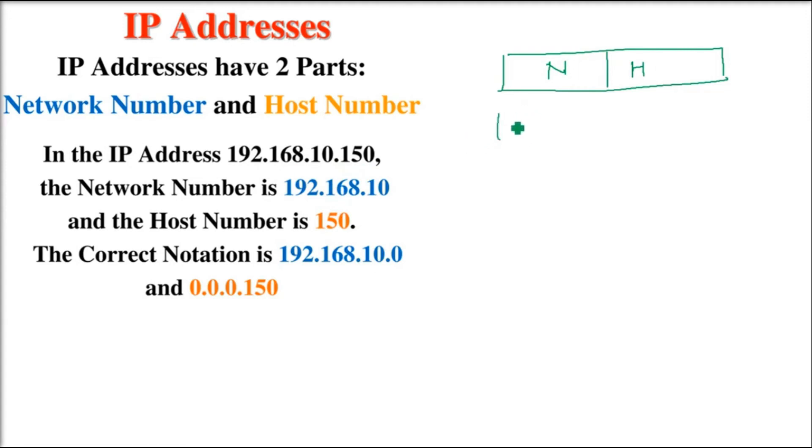In the IP address 192.168.10.150, this portion is the network number and the last part is the host number. What is the correct notation? If you write only the network ID or network number, you write only the network part and put zero in the host part. When asked for the host ID, you write only 150 and the rest are zeros.